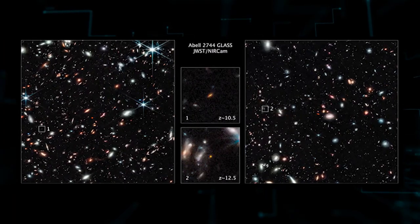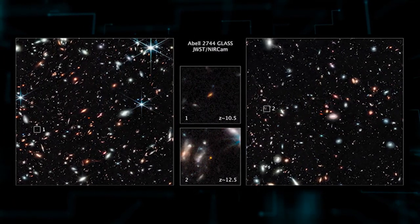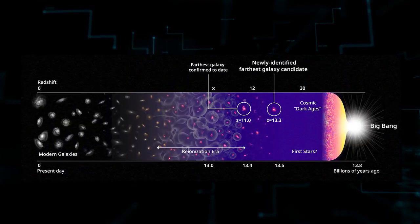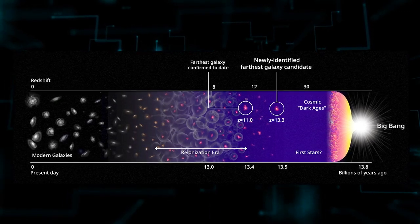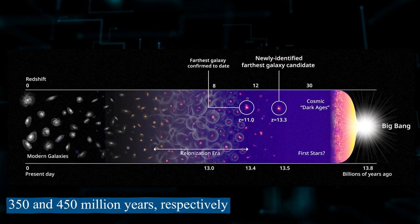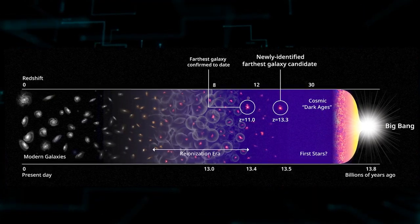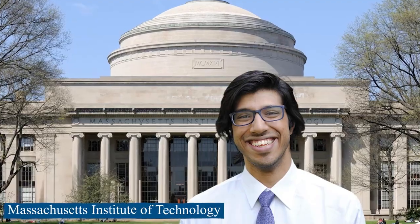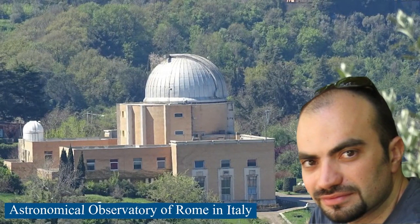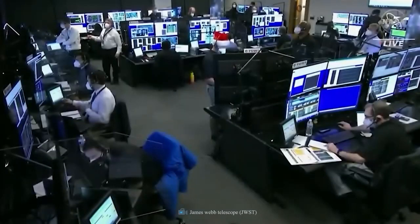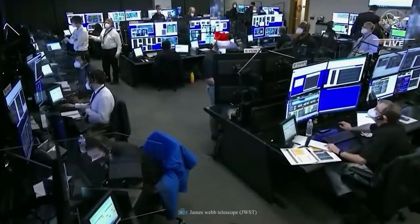Two of the most intriguing candidate early galaxies found by JWST have survived additional analysis, lending credence to the idea that our understanding of the cosmos' past is severely lacking. Both galaxies were the oldest ones known at the time of their discovery, predating the Big Bang by a significant margin, 350 and 450 million years, respectively. Both Rohan Naidu, now at the Massachusetts Institute of Technology, and Marco Castellano, director of the Astronomical Observatory of Rome in Italy, led separate teams that made the discoveries independently.